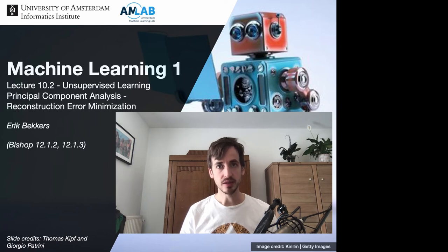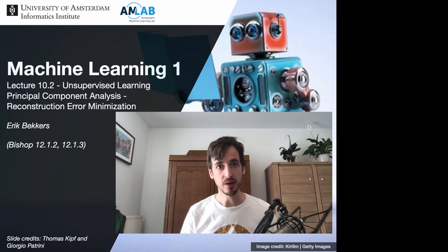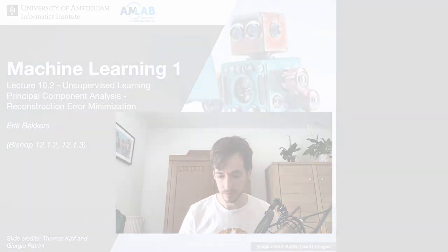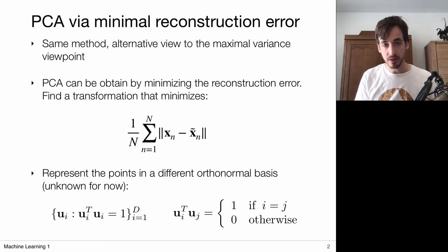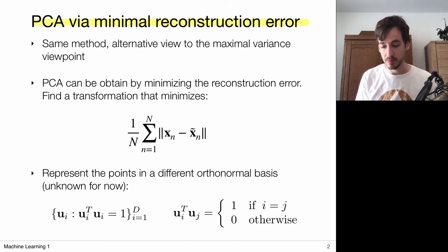In the previous video we talked about principal component analysis and we approached it from a maximum variation point of view. Now in this video we will revisit PCA, approaching it from a minimal reconstruction error point of view. In the end I will show that it actually leads to the same technique — the same principal component analysis technique as we saw in the maximum variation formulation.